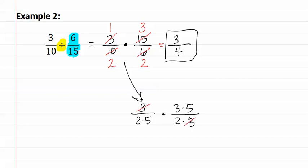After finding the prime factorization, you reduce out the factors that are in both the numerators and the denominators. And you will still get the same answer of three fourths.